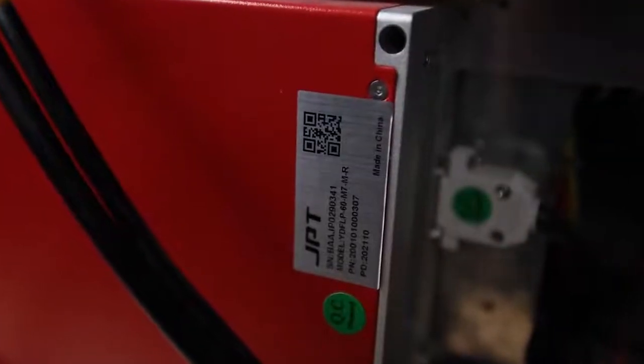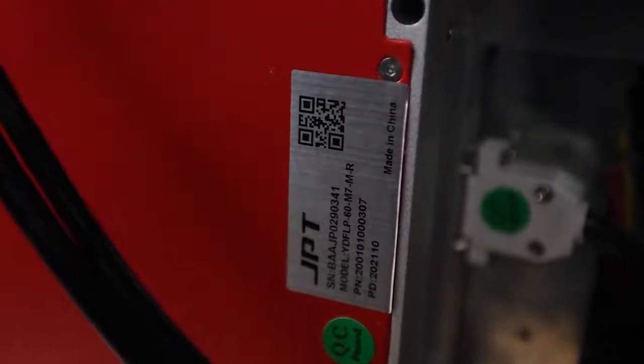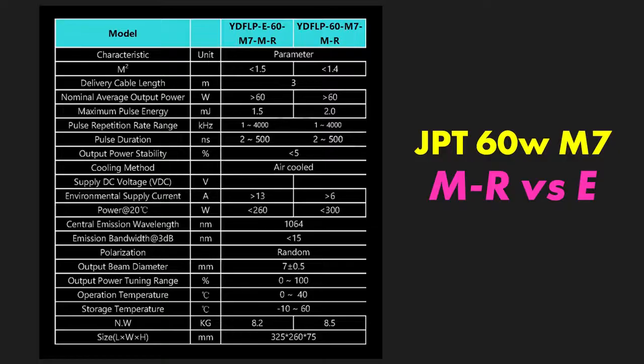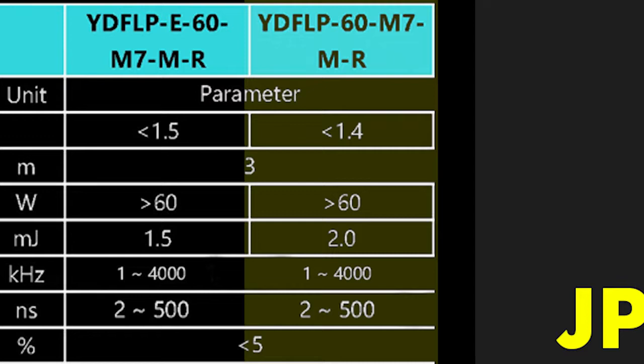It also features the 60M7M-R laser source by JPT, so you'll be treated to a massive frequency range of 1-4000 kHz and a pulse width range of 2-500 ns. Perfect for those looking to complete work quickly and efficiently, and great for operators looking to mark plastic or experiment with color marking on compatible materials.